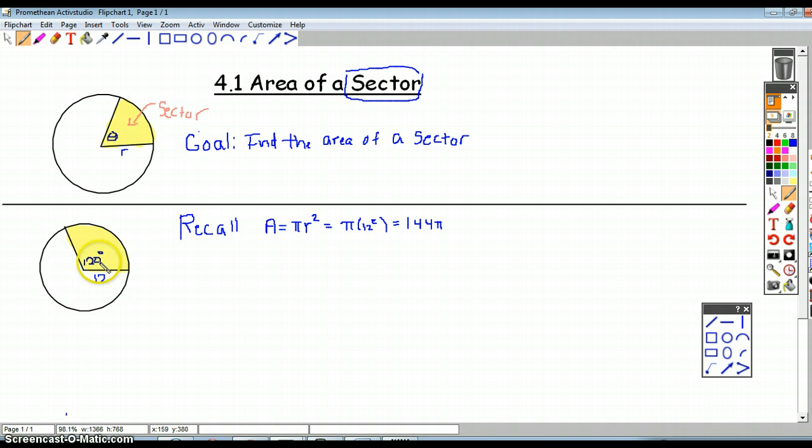Hopefully you see that it boils down to the fact that the central angle is 120 degrees. Just like we looked at in the video for arc length, we can use this central angle to figure out what fraction of the entire area this sector is taking up.